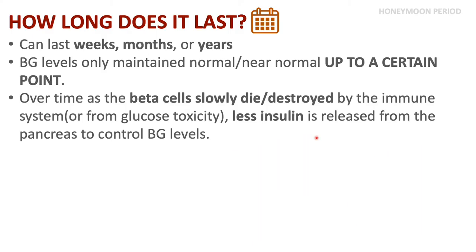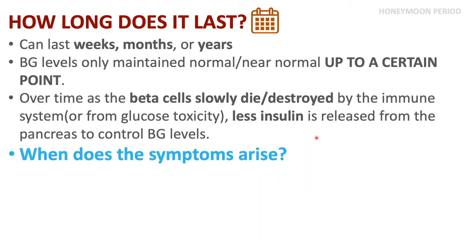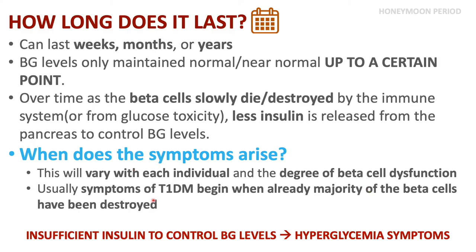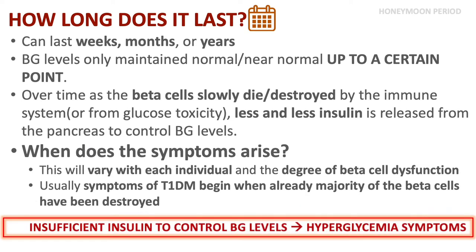This brings up another question: when do symptoms arise? This will vary with each individual and depends on the degree of beta cell dysfunction and beta cell loss. Usually, the symptoms of type 1 diabetes will begin when the majority of the beta cells have been destroyed and there is insufficient insulin being released, giving rise to hyperglycemia symptoms.